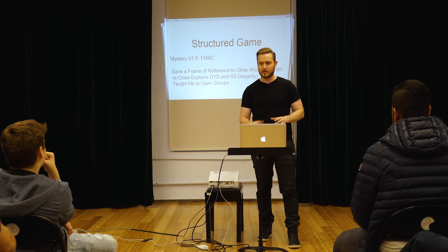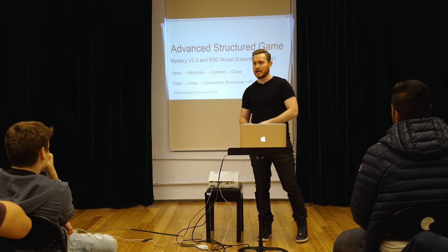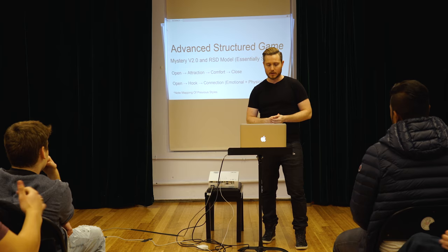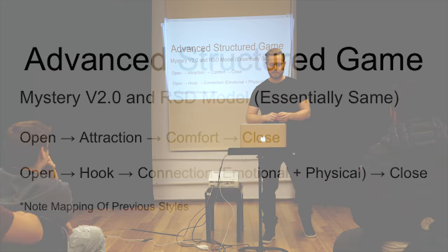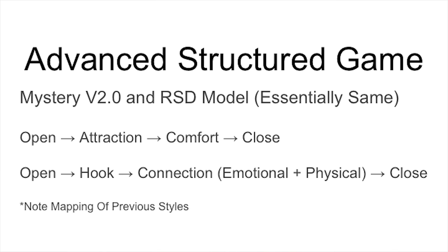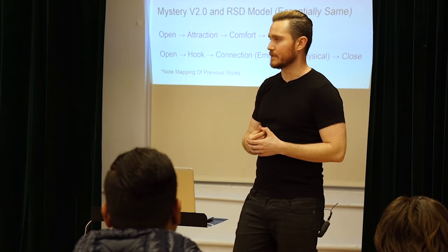The structured game models I'll discuss most are advanced structured game and so-called natural game. You can call it Mystery 2.0 or the early RSD model prior to 2006-2007 — they're essentially the same because they were the same company and taught the same things after splitting. Mystery had Open, Attraction, Comfort, and Close — A1, A2, A3, C1, C2, C3 under comfort. RSD had Open, Hook, Connection (basically comfort), emotional and physical, then close. Essentially the same model with a sequence — very similar to the FMAC framework.